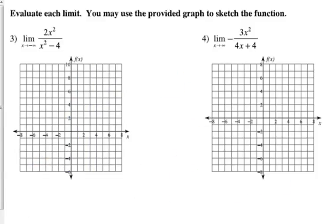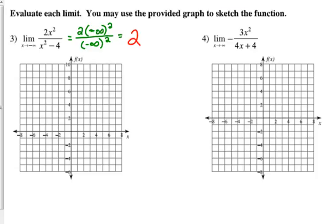Let's do this one: 2x² over x² minus 4. Let's figure out the limit without graphing. When we plug in negative infinity, we get 2 times negative infinity squared on top, and negative infinity squared on the bottom is the only thing that matters — subtracting 4 from infinity isn't really going to change anything. We have the same powers of infinity in numerator and denominator, both squared, and they're both going to give us a positive. So this simplifies to 2, because the infinities squared cancel with each other.